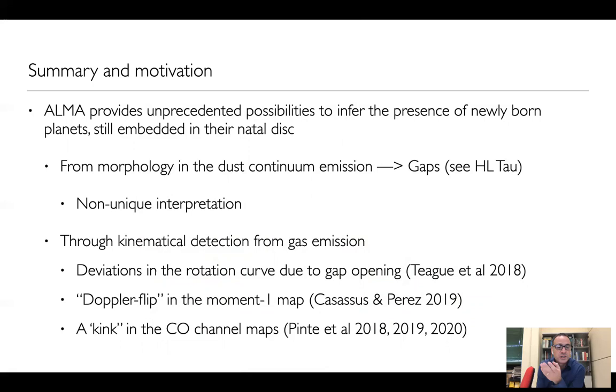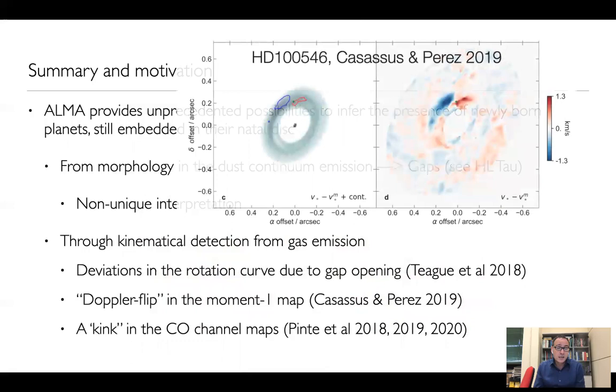For example, one can observe deviations in the rotation curve of CO due to gap opening, as done by Richard Teague and collaborators, or one can observe the moment one map of the disk. For example, this has been done by Simone Casassus and Seba Perez in HD 100546, where the moment one map shows what they call a Doppler flip around the position of the planet.